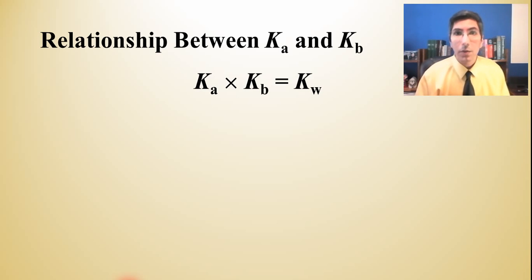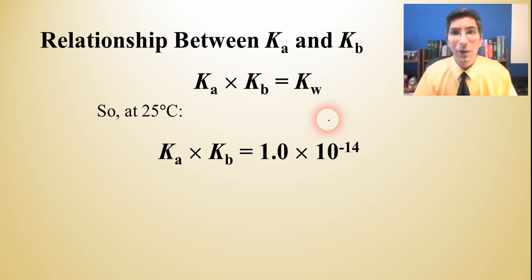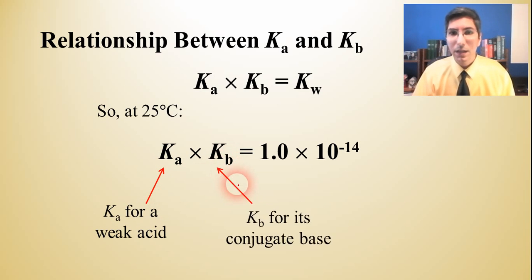Now here we're going to be focusing on the relationship between Ka and Kb. Notice that if you take Ka and multiply it by Kb, that's equal to Kw. We learned in the previous lesson that at 25 degrees Celsius, Kw is equal to 1.0 times 10 to the negative 14th. So that means that if you have the Ka of any weak acid and you want to know the Kb of its conjugate base, it's pretty easy to figure it out. You can just plug it into this equation and solve for it fairly easily.